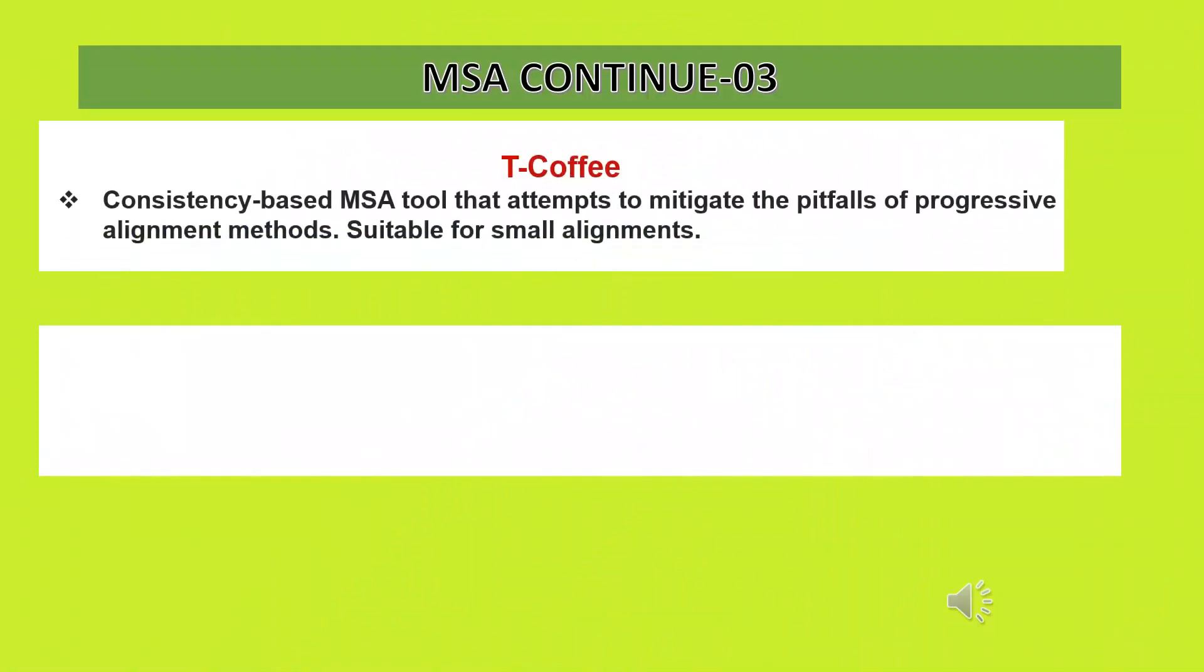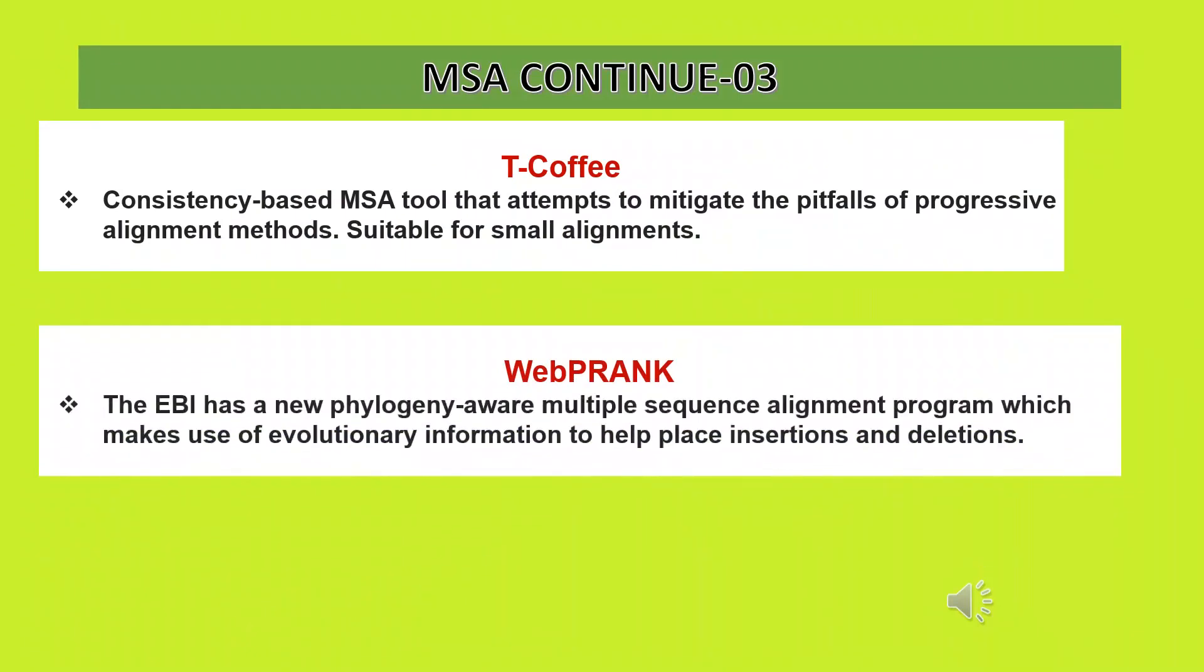The other two MSA tools are: 1. Tea Coffee. Consistency based MSA tool that attempts to mitigate the pitfalls of progressive alignment methods. Suitable for small alignments. 2. Web Prank. The EBI has a new phylogeny aware multiple sequence alignment program which makes use of evolutionary information to help place insertions and deletions.